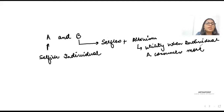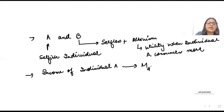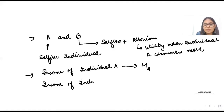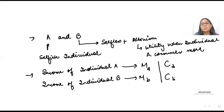The income of individual A is given by mA and the income of individual B is given by mB. The consumption of individual A is cA and the consumption of individual B is cB.